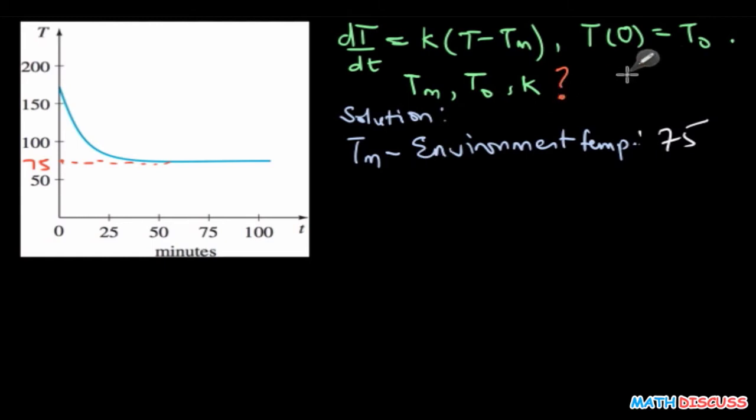Next is how do we find T₀? T₀, according to what we have here, is the initial temperature. That is when t equals zero, when the time is zero, what is the temperature? So the temperature when time equals zero is this point here, and this point corresponds to 175, something like that. So 175, that is T₀.